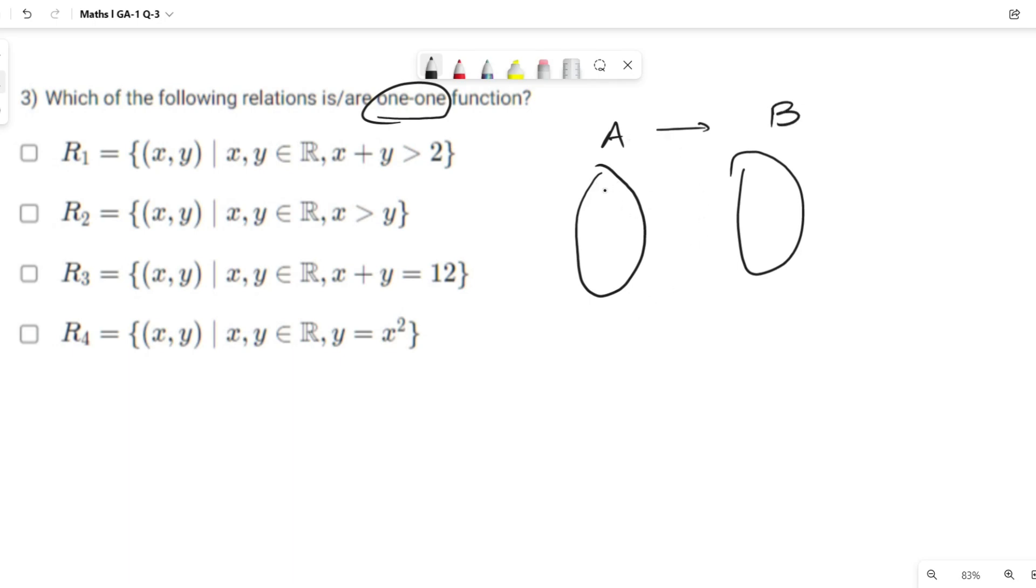Let us take elements 1, 2, 3, 4 and in B let us take 5, a, c. Okay, so the 1-1 function is...